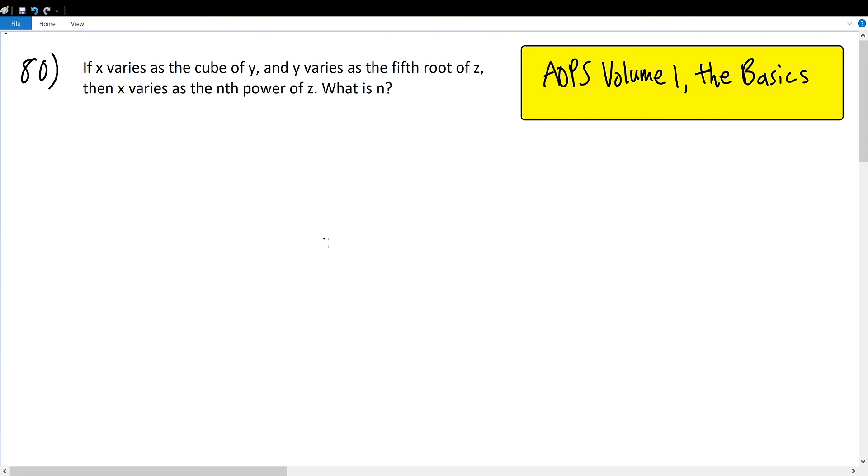AOPs volume on the basics number 80. If x varies as the cube of y and y varies as the fifth root of z, then x varies at the n power of z. What is n?